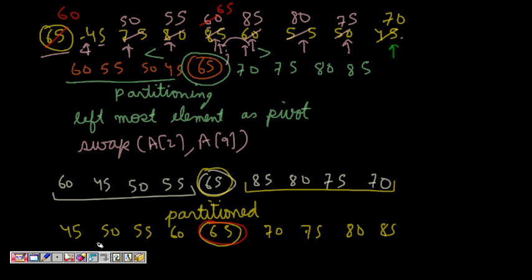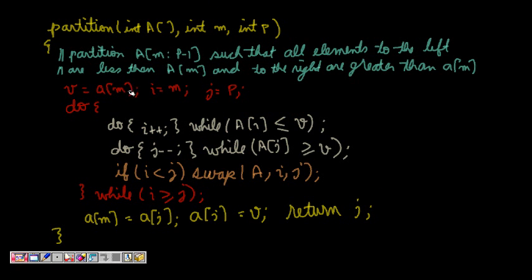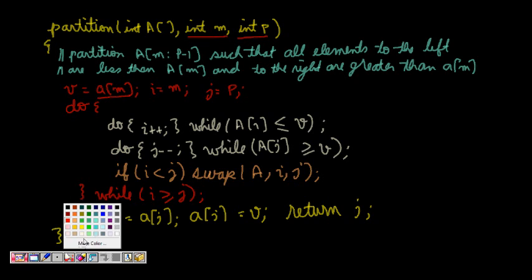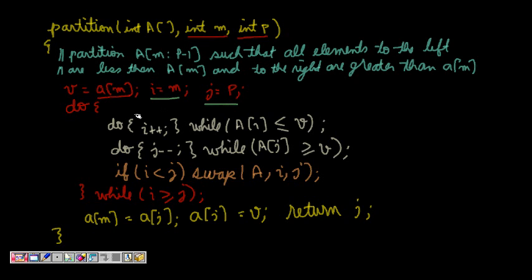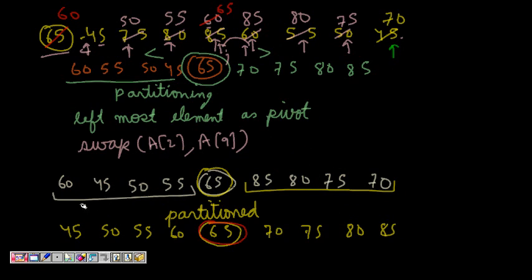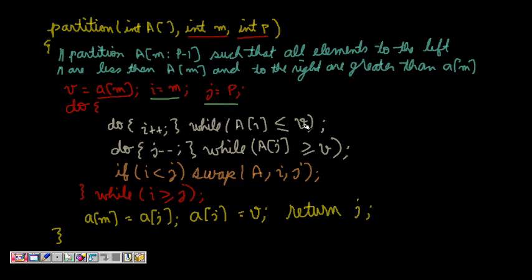Now let's see the code. We call partition with an integer array, int m as the leftmost index, and int p as the rightmost index. The pivot v is the leftmost element A[m]. We set i equal to m and j equal to p. We do i++ while A[i] is less than or equal to v — so while values are less than the pivot element we keep moving forward, and we stop when A[i] becomes greater than v.